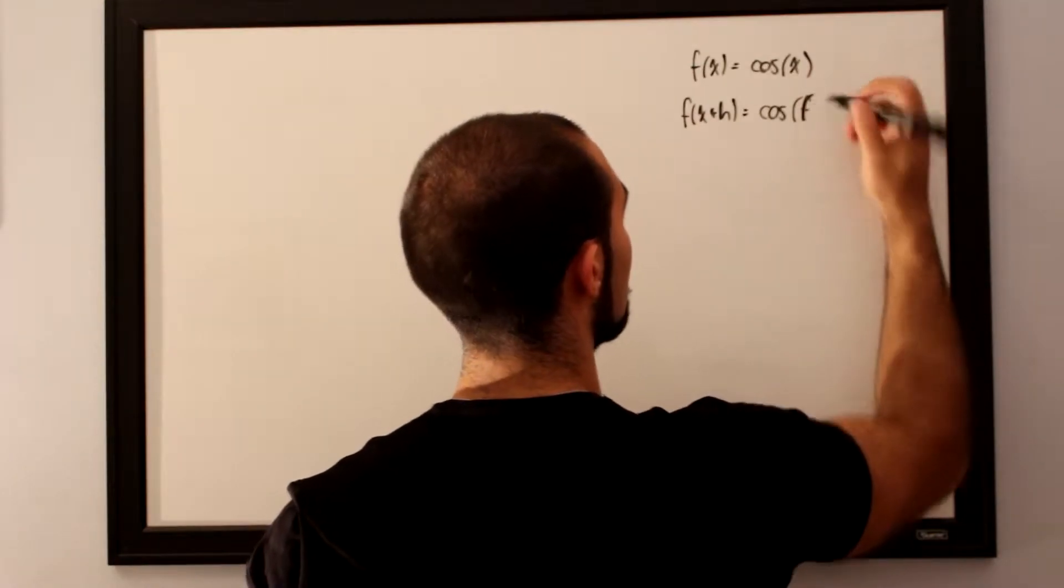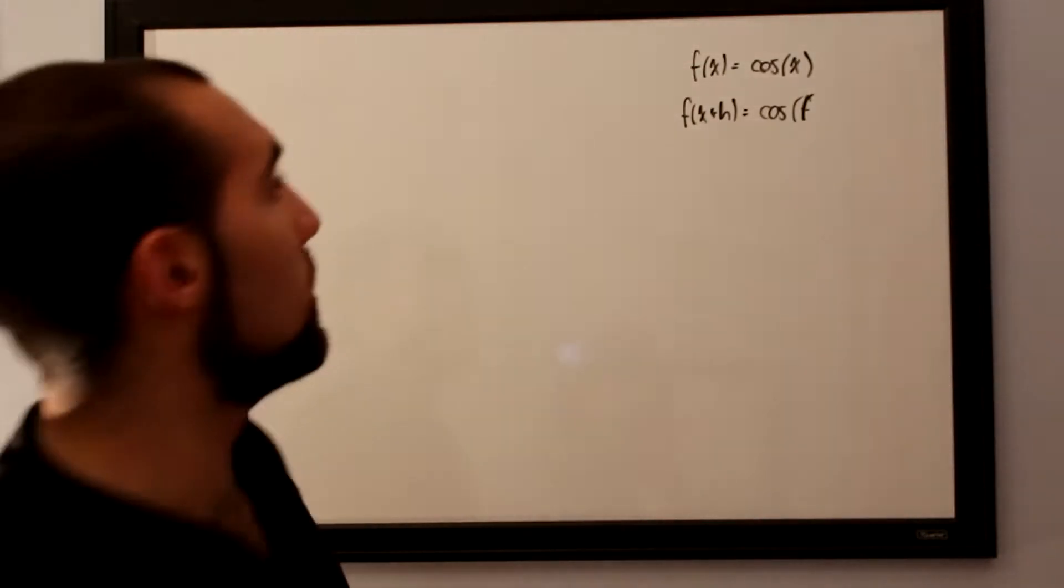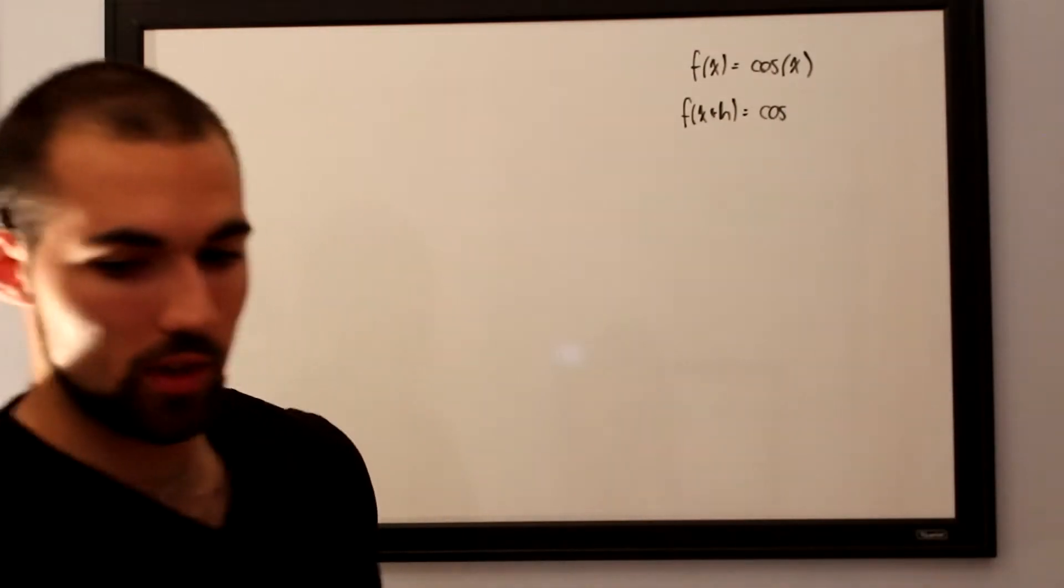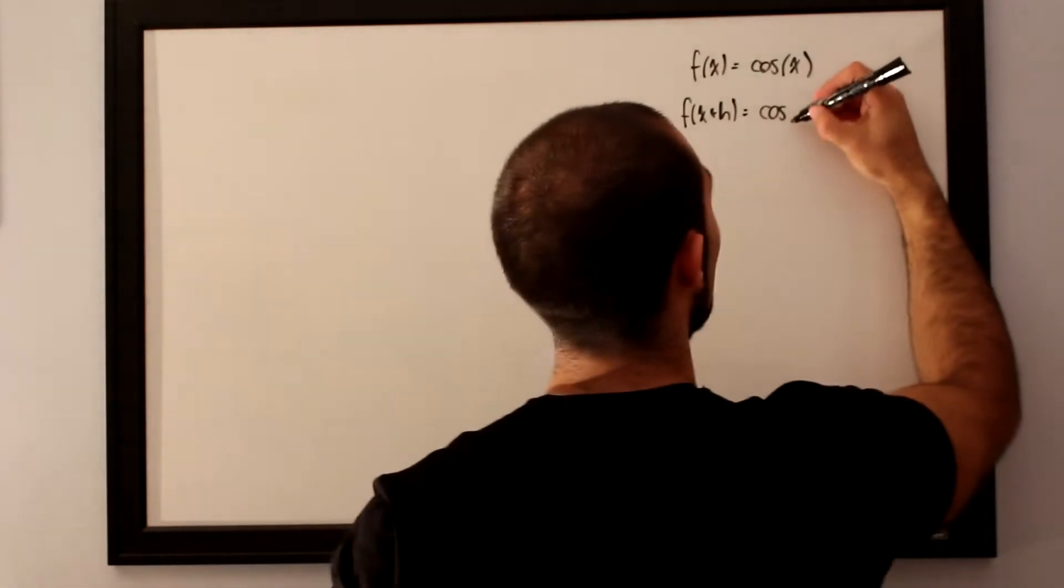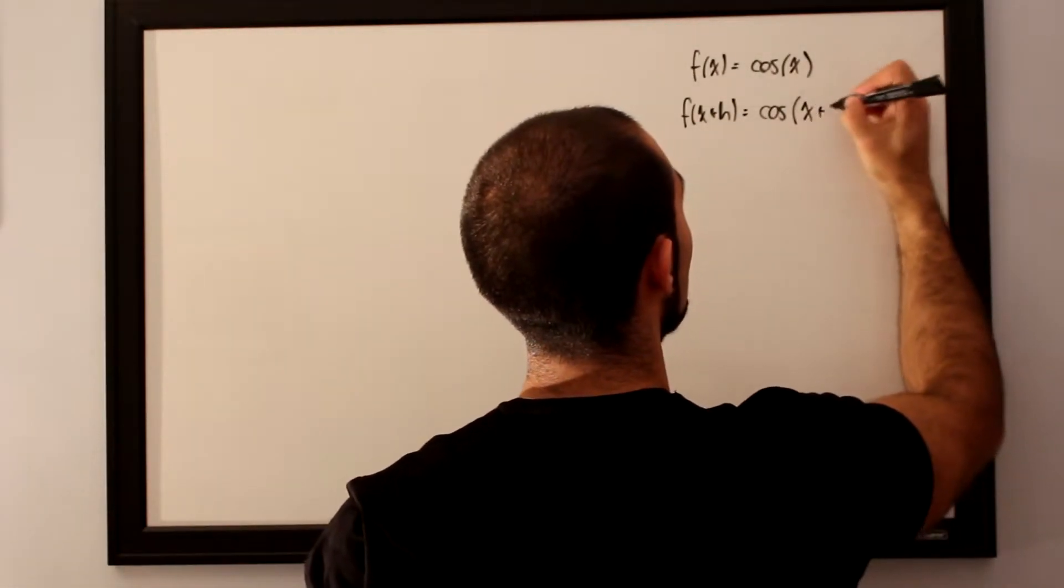Wait, cosine of x, my god, what a mess I'm making for myself. So our f of x plus h is simply equal to cosine of x plus h.